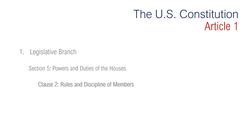Section 5, Clause 2 is regarding the rules and discipline of members. It says that the House and the Senate may adopt their own rules to guide their proceedings. Each may also discipline its members for conduct that is deemed unacceptable. No member may be expelled without a two-thirds majority vote in favor of expulsion.